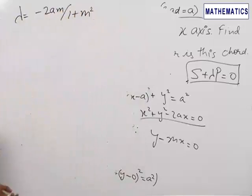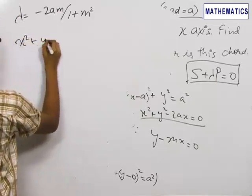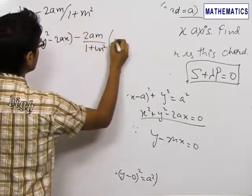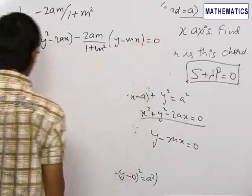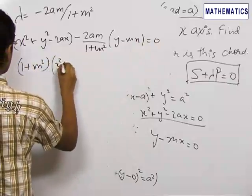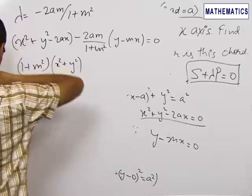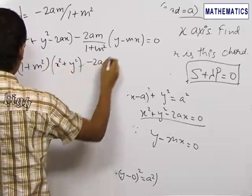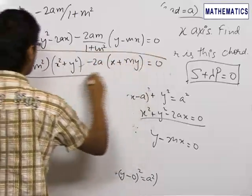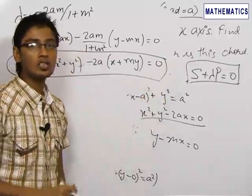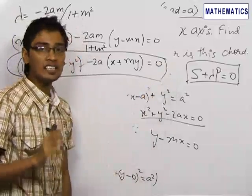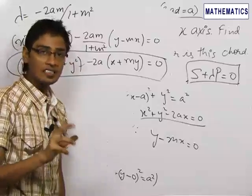So the circle becomes x squared plus y squared minus 2ax plus (minus 2am upon 1 plus m squared) times (y minus mx) equals 0, which gives the equation of the circle as (1 plus m squared) times (x squared plus y squared) minus 2a times (x plus my) equals 0. Hence, we have found the equation of the circle having the chord y equals mx as its diameter.